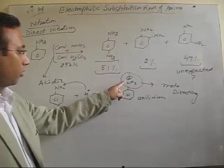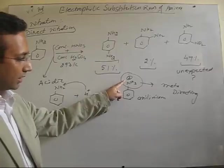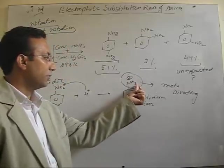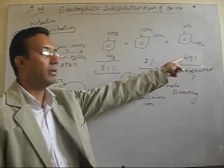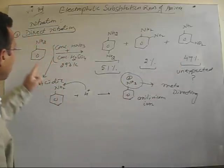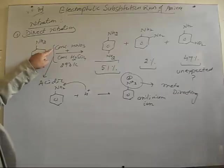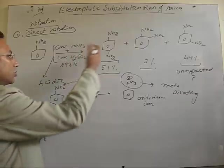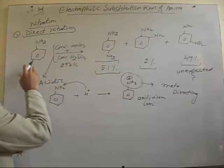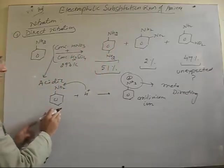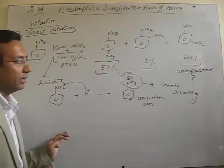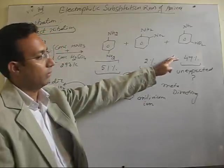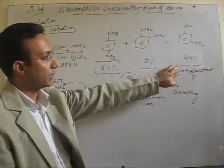Because of the formation of this anilinium ion, the ultimate nitration as a result of this group gives you a meta product. So, aniline when undergoes these conditions, then there is normal nitration, but at the same time, so many molecules of aniline get converted into an anilinium ion, which upon nitration gives you typical meta product, which is unexpected in this case.